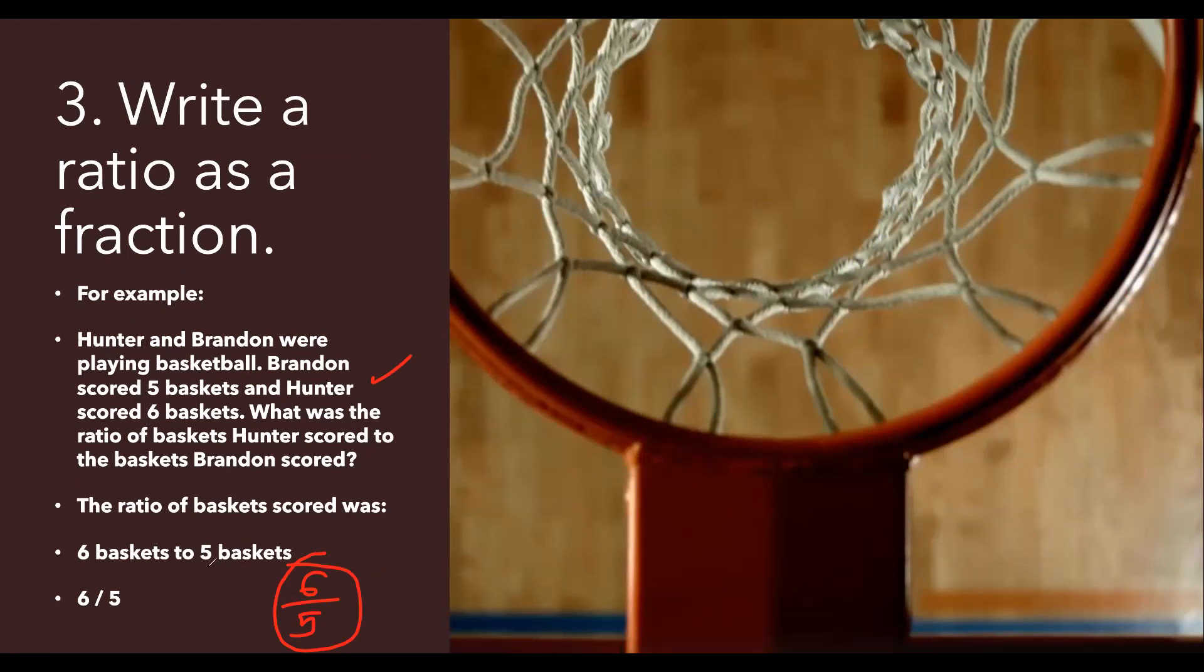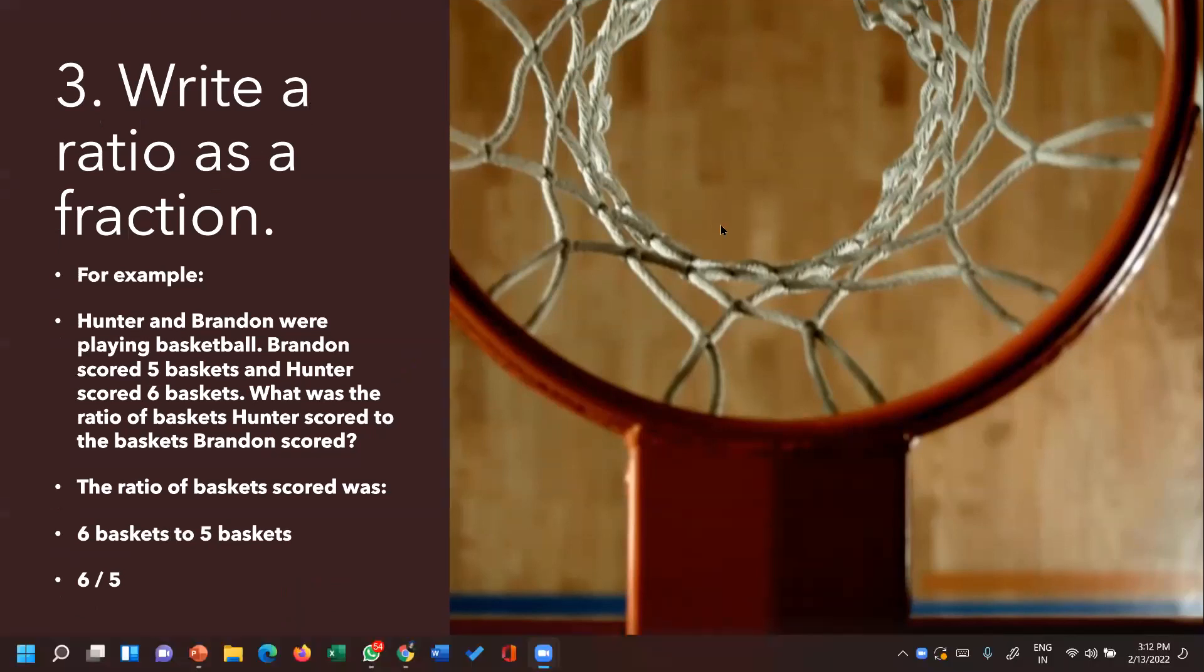We saw that we can write 'is to', we can put two dots, we can write in fraction form. These are the three forms in which we can write down the ratio. Here we are talking about basketball. If any of you like basketball, you can put it down in the comment section. What's your favorite sport?